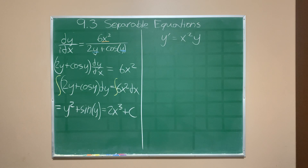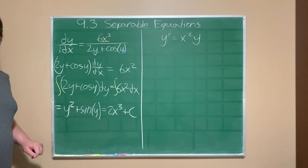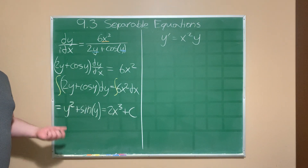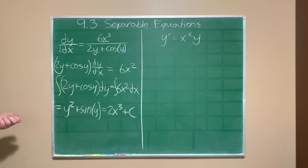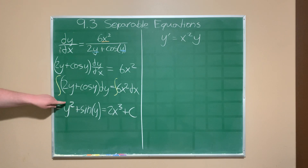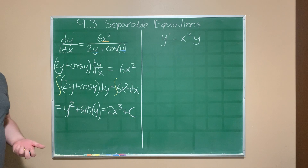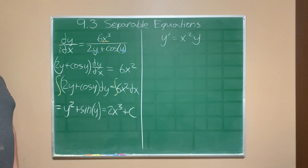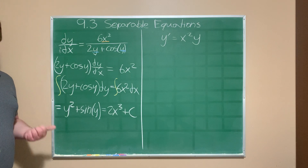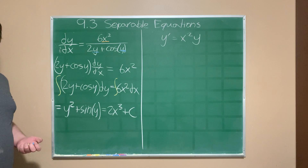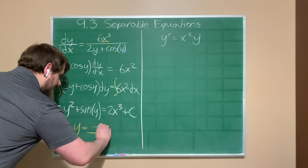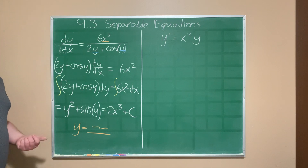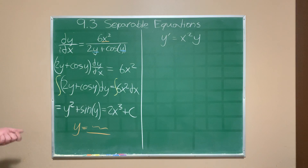Now we have y all by itself on one side, x by itself on the other, and no differentials or derivatives anywhere in the problem. Unfortunately, we can't isolate y in this case — there's no way to combine a power function added to a trig function. So this is a case where the solution can't be written explicitly. An explicit solution would be something like y equals some expression.